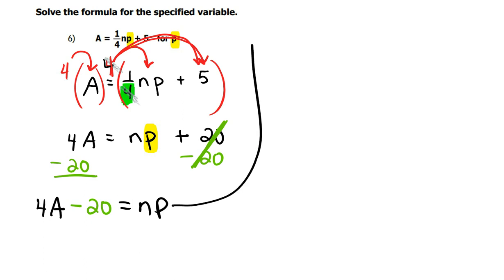Okay, and then I'm kind of running out of room. So let me come up here. I'm going to take my 4A minus 20 equals NP.